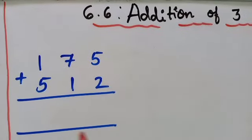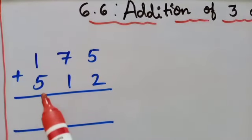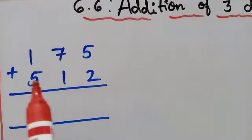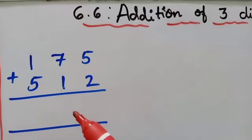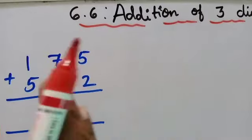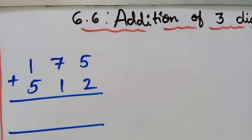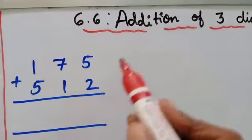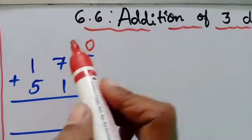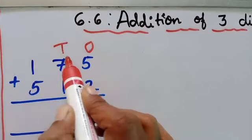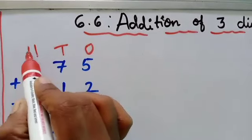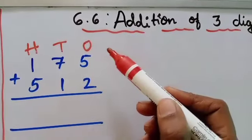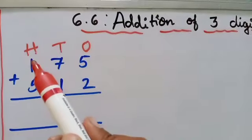The first example is 175 plus 512. In the previous class we finished only two digit numbers. Now you can see on the board we have three digit numbers. So let's write the place value for this. This is ones place, this is tens place, and after tens which place comes? Hundreds. So ones place, tens place, and the next comes hundreds place.